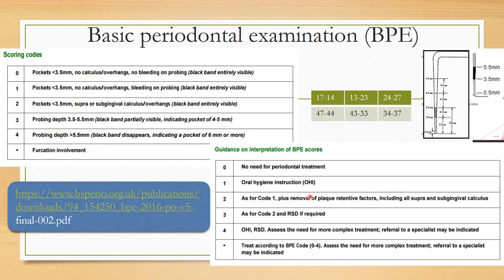Coming to the Basic Periodontal Examination (BPE), which is important. We assess sextants: 17–14, 13–23, 24–27, 34–37, and 44–47. The scoring codes are 0, 1, 2, 3, 4, and star. For codes 0, 1, and 2, pockets will be less than 3.5 mm. We use the WHO probe with a 0.5 mm ball and color-coding markings at 3.5–5.5 mm, 8.5 mm, and 11.5 mm.